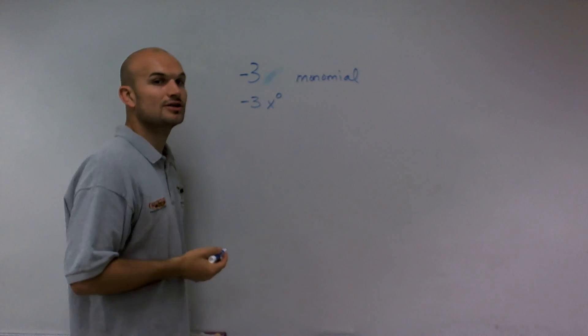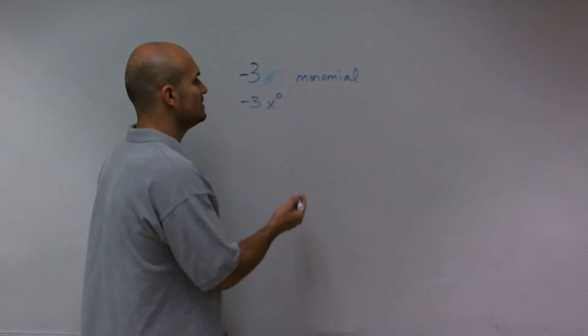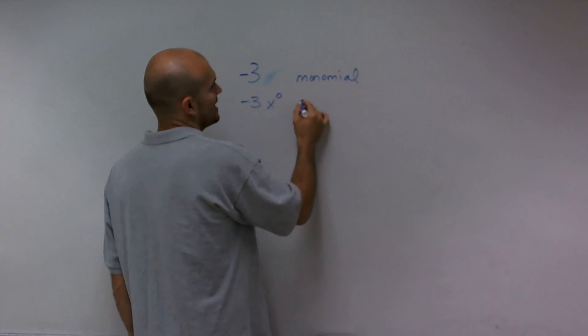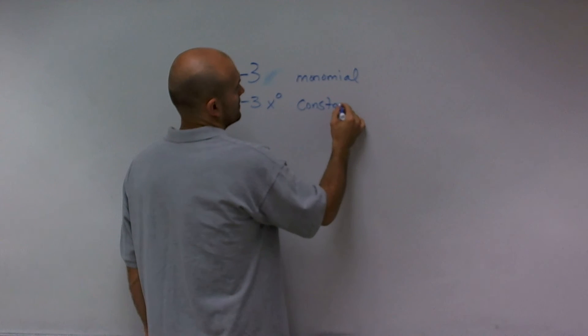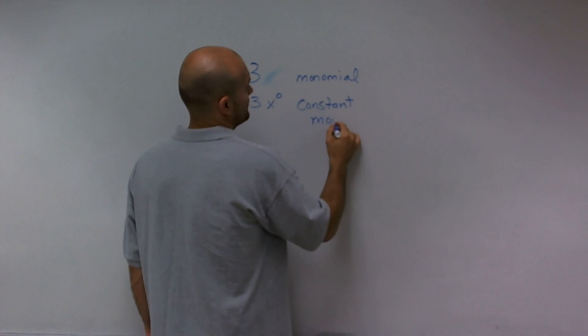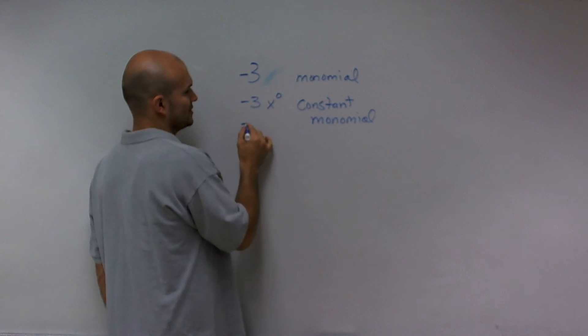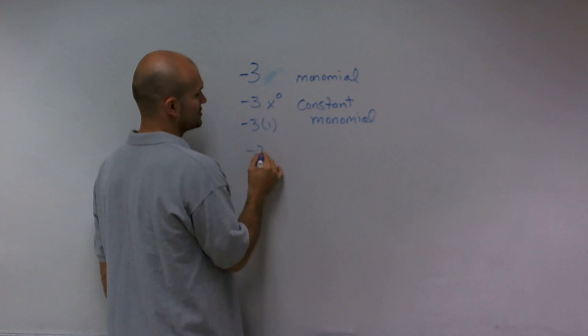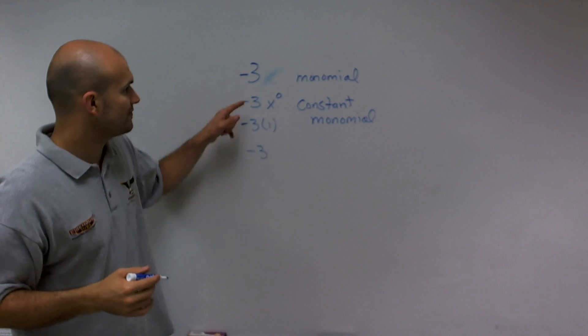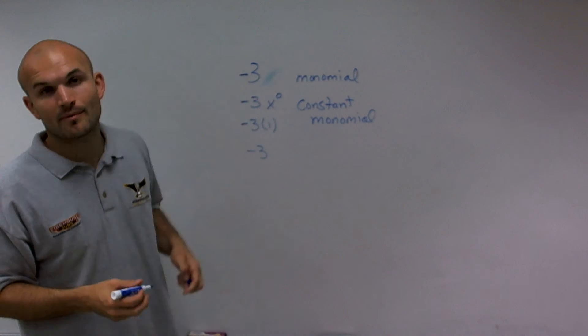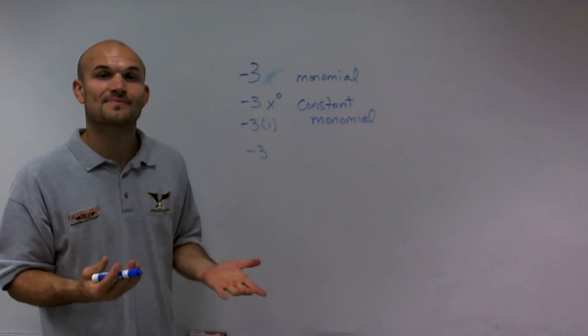Therefore, since it's to the 0 degree, we say this is a constant monomial. X to the 0 is just negative 3 times 1, which is negative 3. So this is a constant, and we know it's a monomial. There you go.